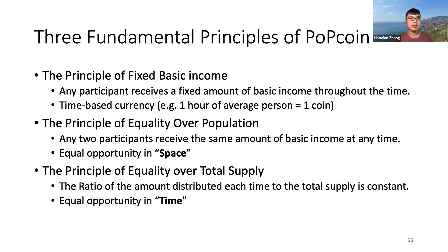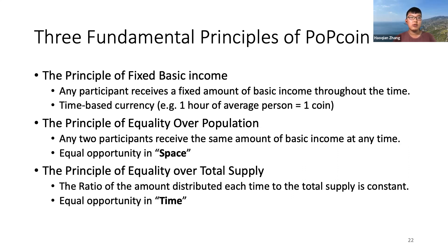The second principle is the principle of equality over population — any two participants receive the same amount of basic income at any time. The third principle is the principle of equality over total supply — we keep the ratio of the amount distributed each time to the total supply constant. We name this property equal opportunity in time.